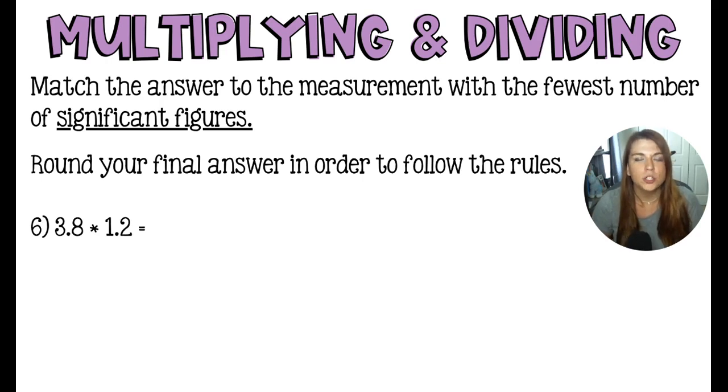When multiplying and dividing, you want your measurement with the fewest number of significant figures to be the one that controls the answer. So in both 3.8 and 1.2, we're working with two significant figures. So the final answer should also be two significant figures. This is a coincidence that these are the same level of precision or the same number of significant figures. You're always going to want to match whichever one has the lowest precision. Again, when you do math, you should not be adding precision. The math should help you maintain precision.